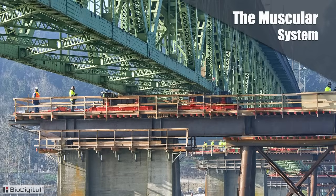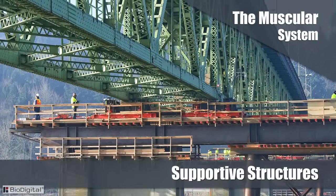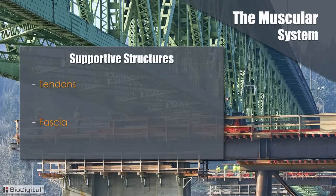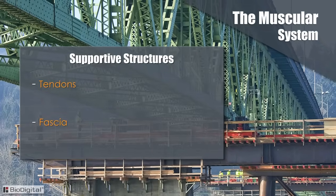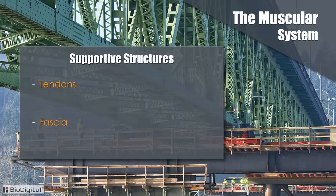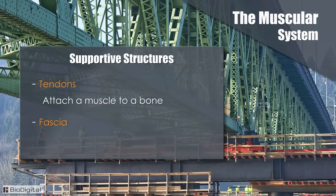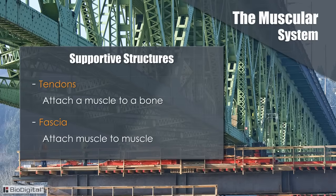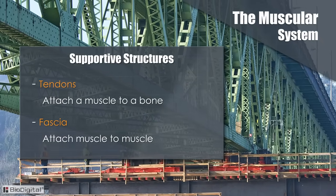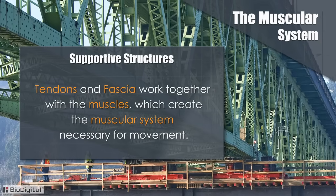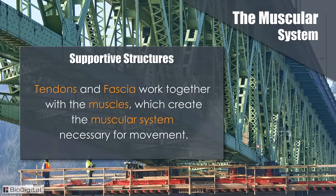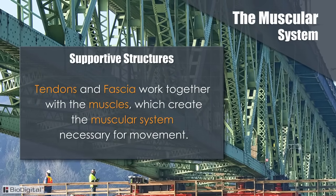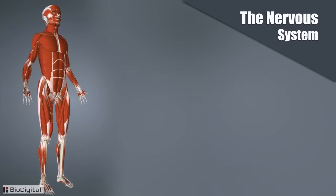Although muscles make up the muscular system, there are supportive structures that are also a necessary part of it. Tendons and fascia are important supportive structures for the skeletal muscles. Simply put, tendons attach a muscle to a bone, and fascia connects muscles to other muscles. Tendons and fascia work together with muscles to create the muscular system necessary for movement.